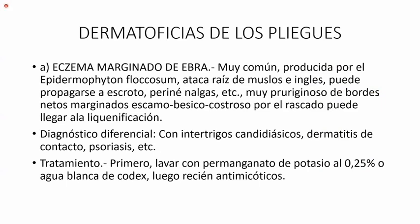También las dermatofitosis de los pliegues: grandes pliegues y pequeños pliegues. Entre los grandes pliegues estaría el eczema marginado de Hebra, muy común, producido por el Epidermophyton floccosum, que ataca raíz de muslos e ingles. Puede propagarse hasta escroto, periné, nalgas, etc. Es muy pruriginoso y de bordes eccematizados, vesiculocostroso. Por el rascado puede llegar a la liquenificación.